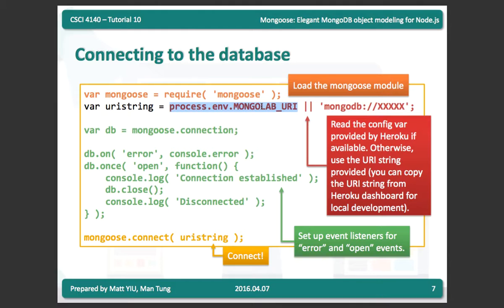When you deploy your app on Heroku, Heroku sets an environment variable that you can access in your program so you don't need to hard-code the URI. I add a fallback: if the MongoDB URI environment variable is not available, I use the hard-coded local URI. This way, when the application is on Heroku it uses the environment variable, and on your local machine it uses the hard-coded value. This is good practice.